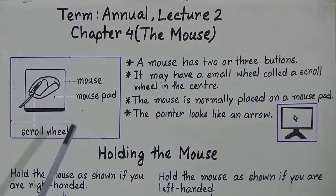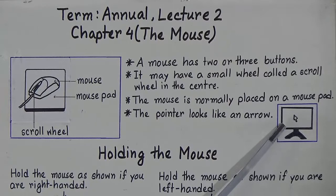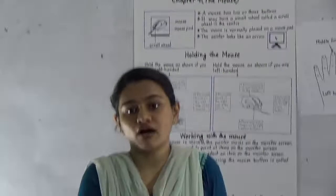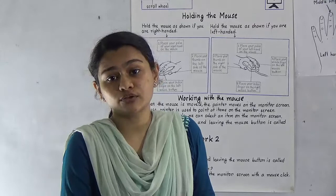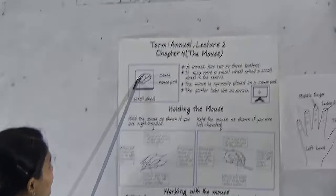If you move the mouse on the mouse pad, you will find that an arrow is moving on the monitor screen. This arrow is called the mouse pointer. Some mice are connected to the computer by wires, and some mice are not connected by wires. When a mouse is connected to the computer by a wire, it has a tail — it looks like the tail of a mouse.